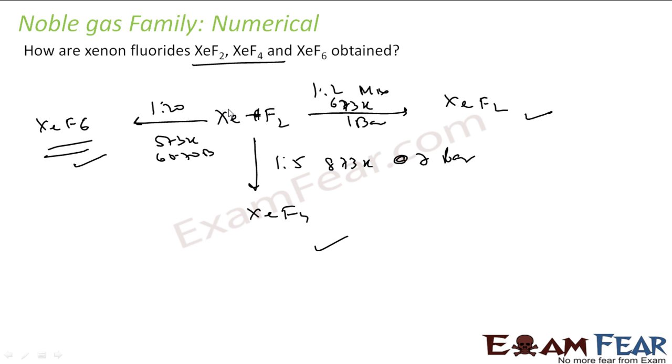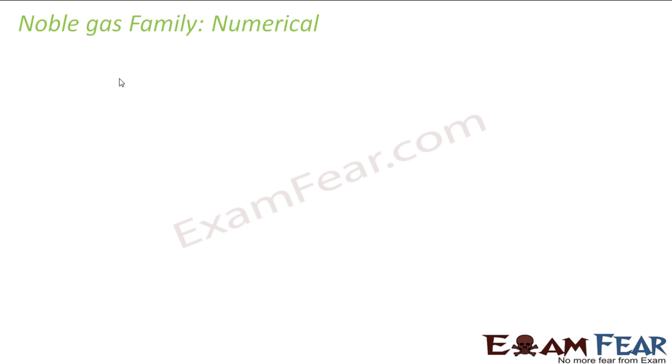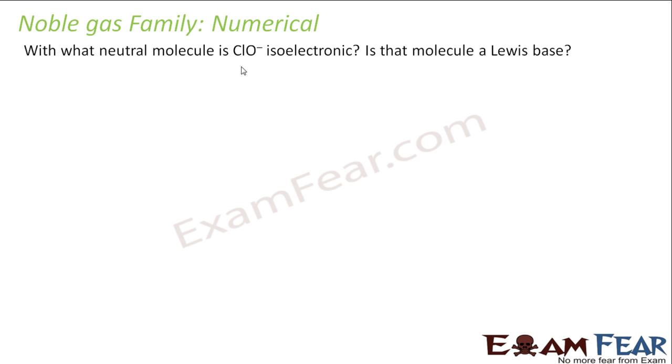So depending on various conditions, the same will give you different fluorides of xenon. The next is, with what neutral molecule ClO- is isoelectronic? Isoelectronic means same number of electrons. So ClO-, you can replace O- with fluorine, because you add electron to oxygen, you get fluorine, I mean the number of electrons is same. So you can replace ClO- with ClF, pretty easy.